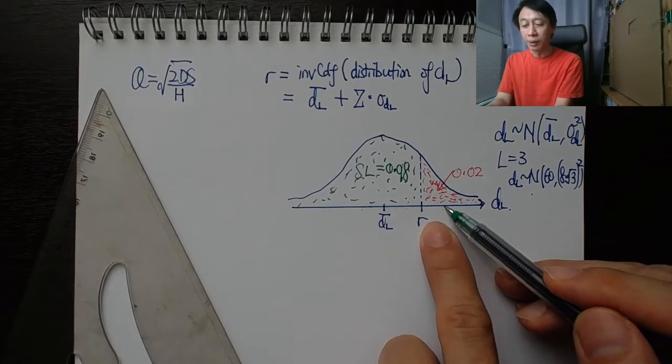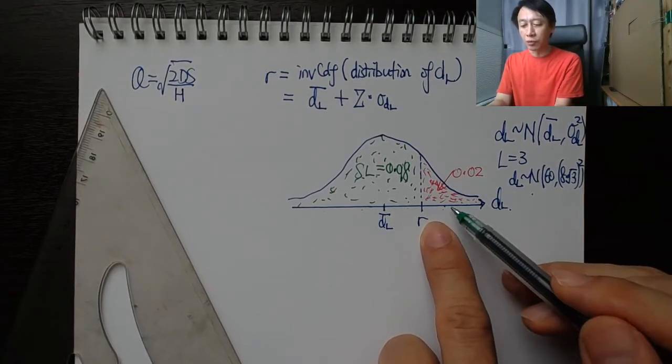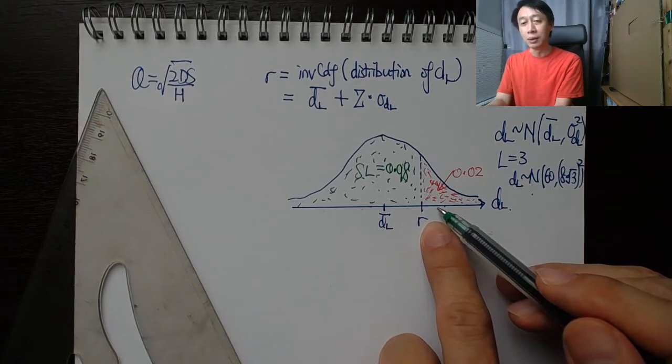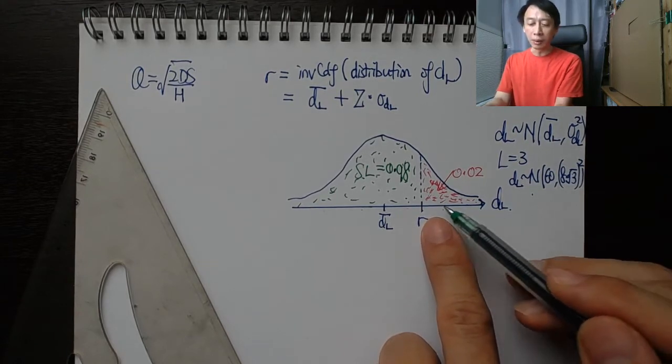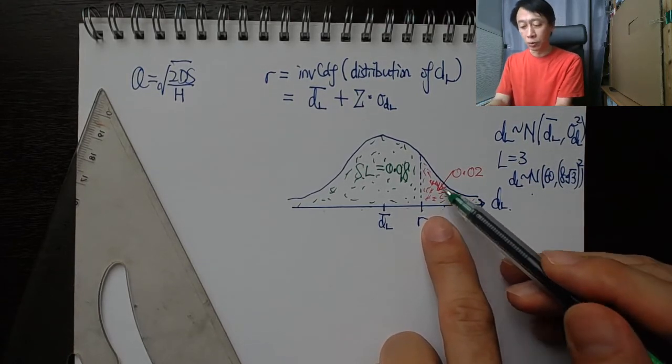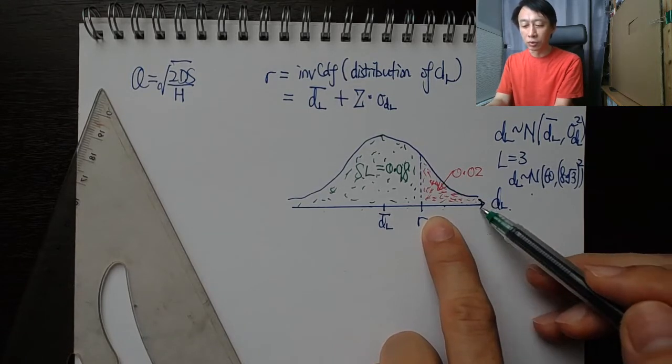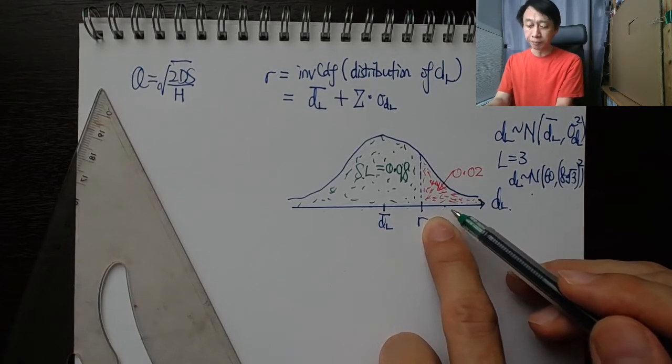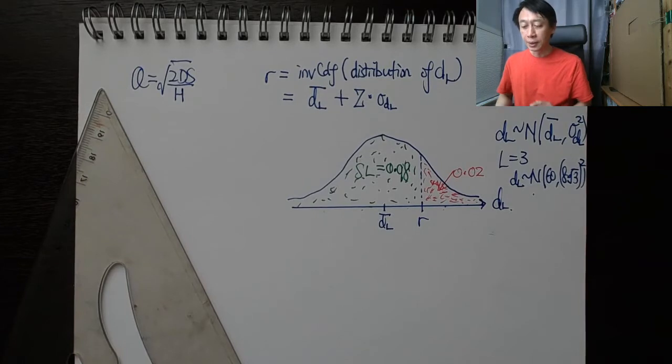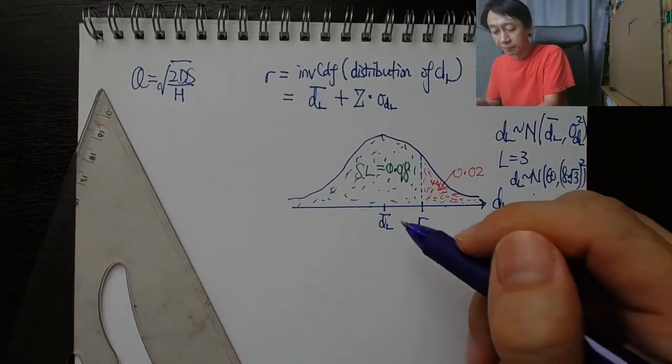Now no matter whether the demand was very large or very little, just exceeding our reorder point, those are the parts that we cannot fulfill. So that chance is going to total up to two percent. That's what it means.